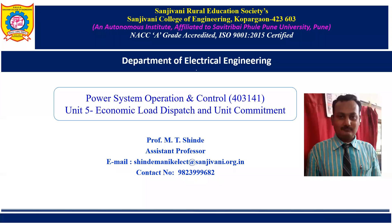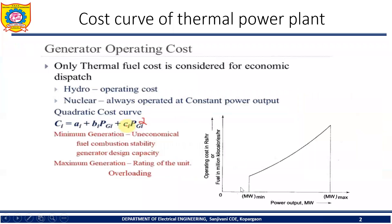In the second part of Unit 5, we are going to see the cost curve of a thermal power plant. Regarding generator operating cost, we are going to consider only thermal fuel cost for economical dispatch — not hydro, not nuclear. You may have the question: why?